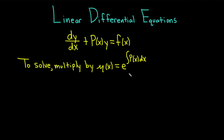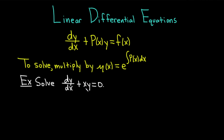Let's go ahead and do an example right away. Solve dy/dx plus x times y equals zero. First step is to make sure that it matches the form — in particular you want to make sure there's a one in front of the dy/dx, and there is. Using matching, we can see that P(x) is going to be equal to x in this case.